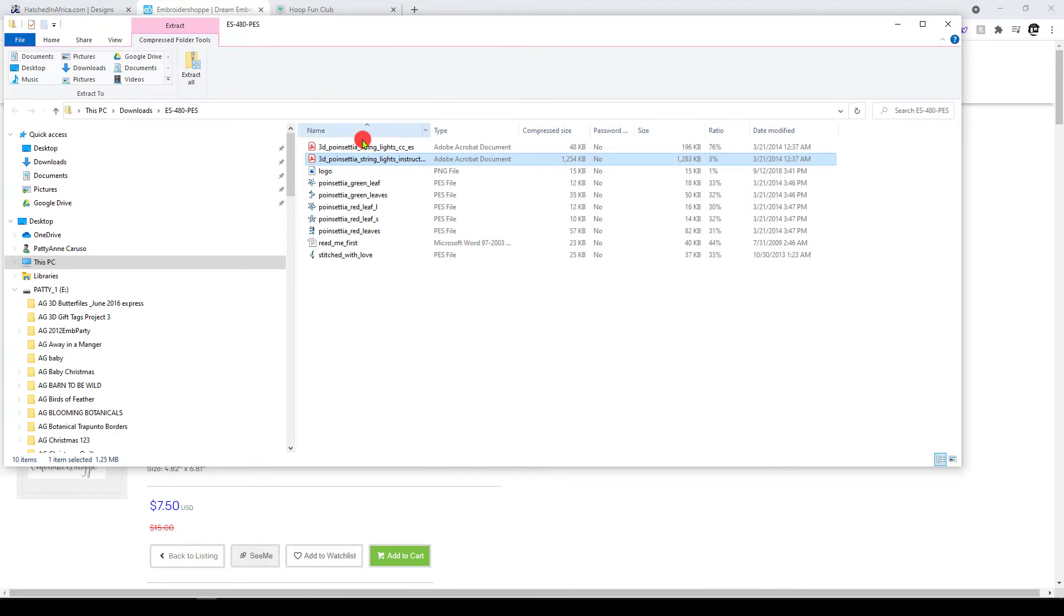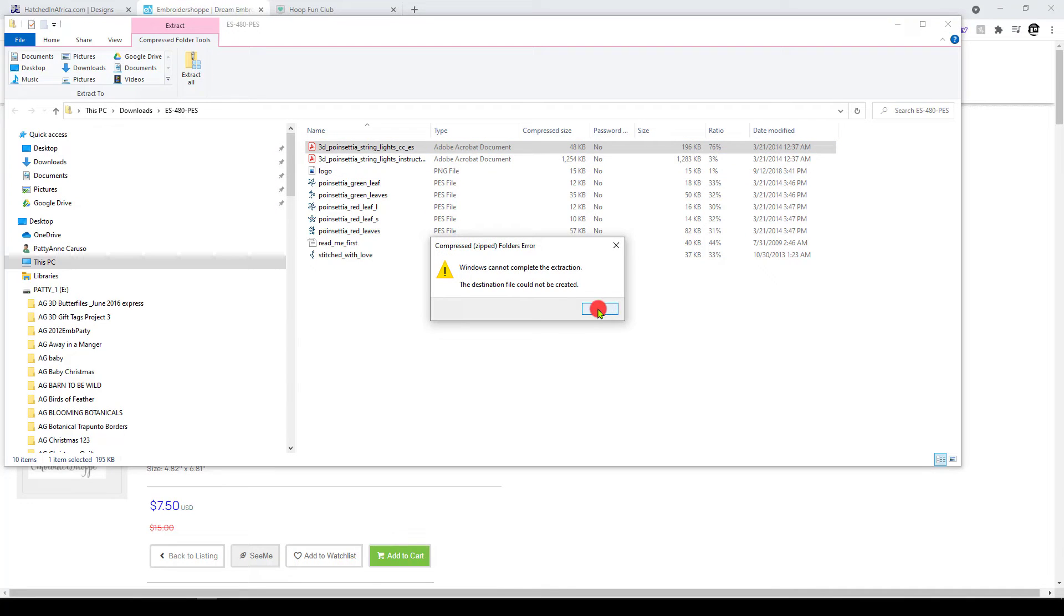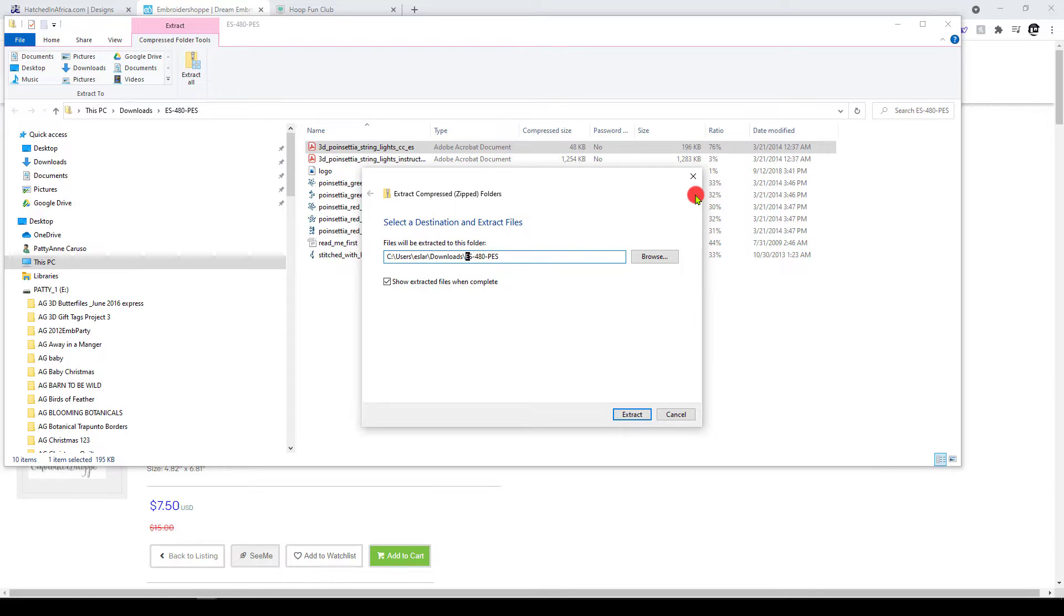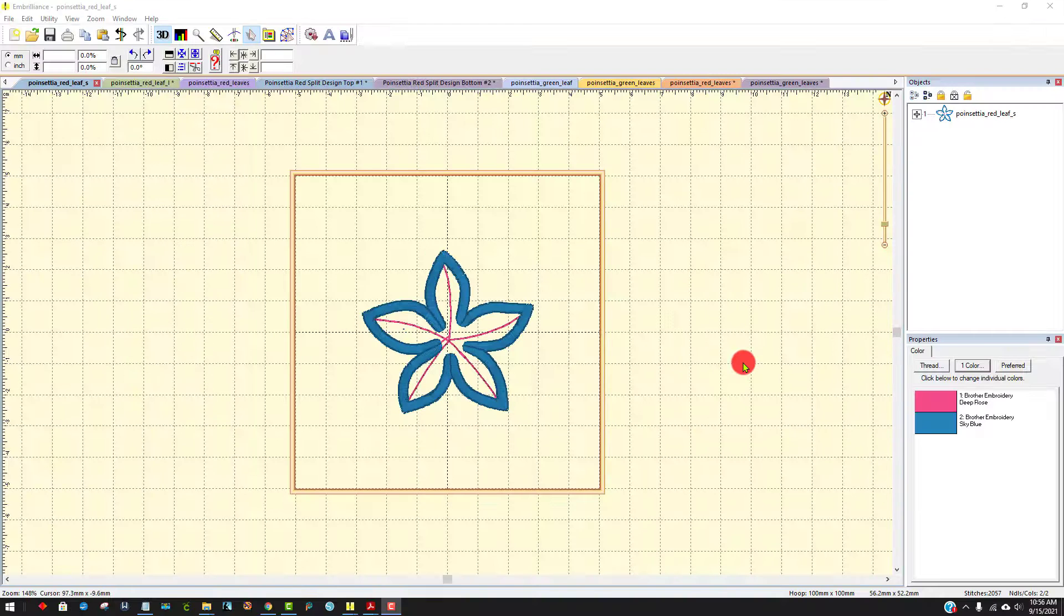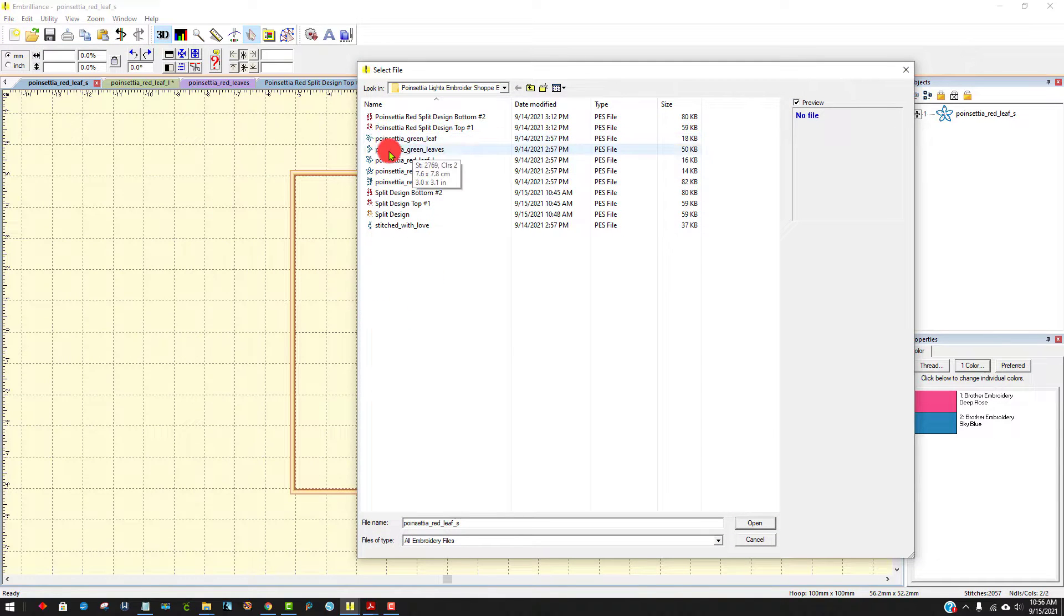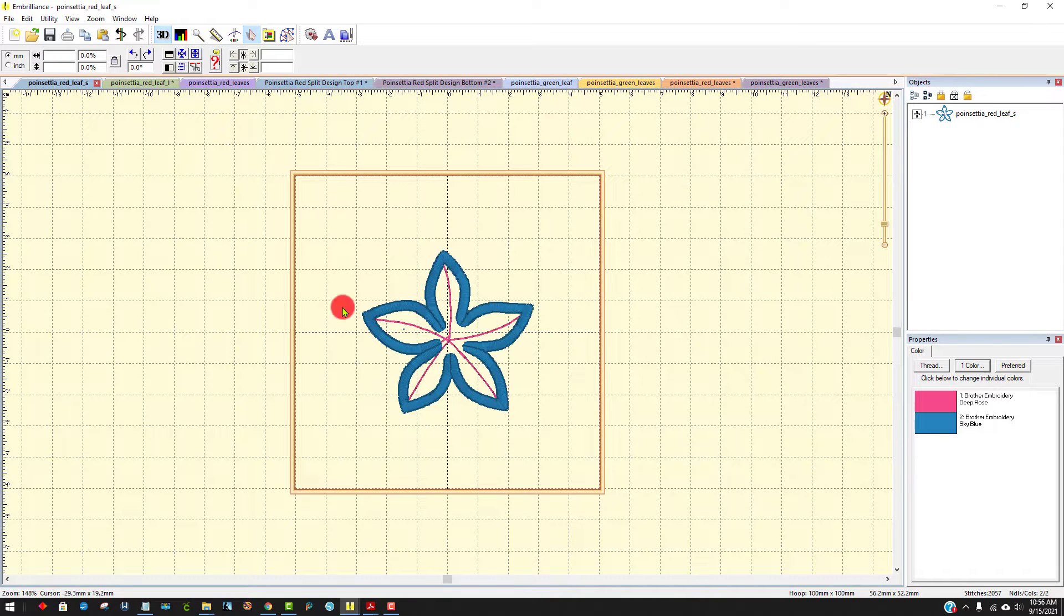So here they are right here. I downloaded it, right? And then I went ahead and opened up these. Oh, first I have to extract all. And I'm going to change the name of this a little bit to poinsettia lights. And I also like to put it after that, maybe where I got it. So embroider shop and I'm going to extract.